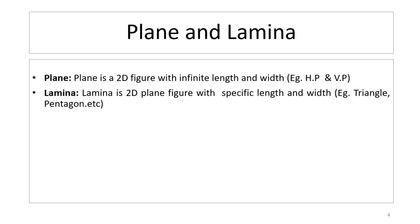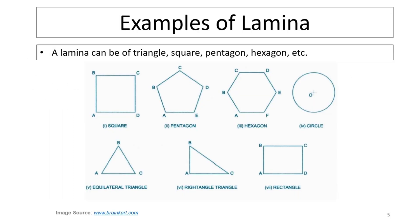Now, the different laminas we will be drawing are: first, a triangular lamina; second, a square or rectangular lamina; third, a pentagonal lamina; fourth, a hexagonal lamina; and fifth, a circular lamina. Normally we call these as planes also, so we will learn how to draw the actual shapes of these planes.